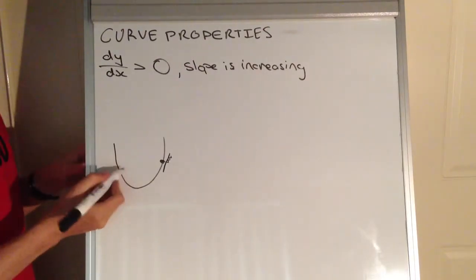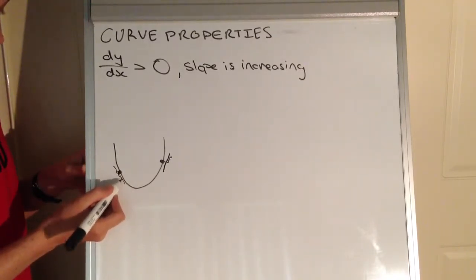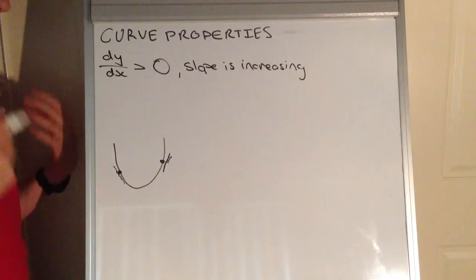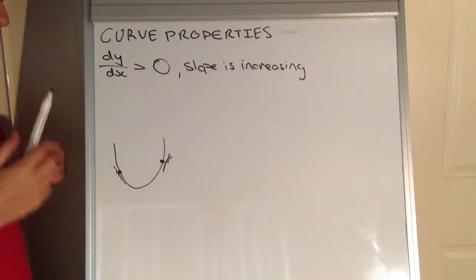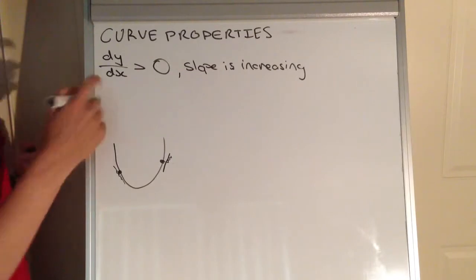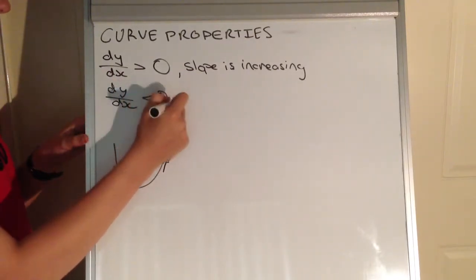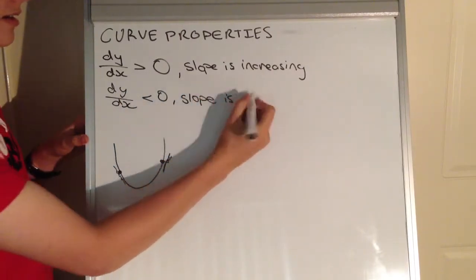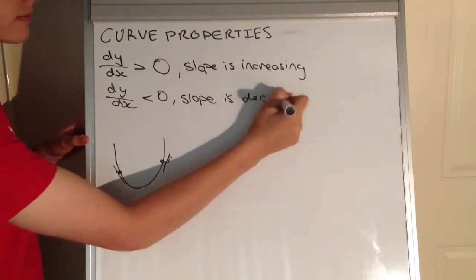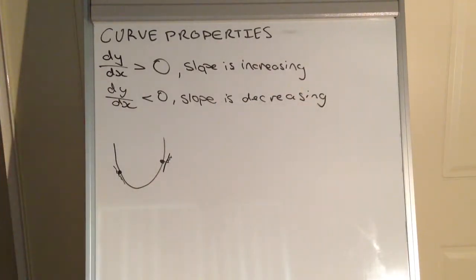And if we were to survey it down here, we could see that it's negative because it has a negative y-step and a positive x-step. And a positive and a negative make a negative, so the dy/dx would be less than zero. So when the dy/dx is less than zero, the slope is decreasing. The dy/dx is just the derivative — something you should be familiar with from the previous unit on differential calculus.